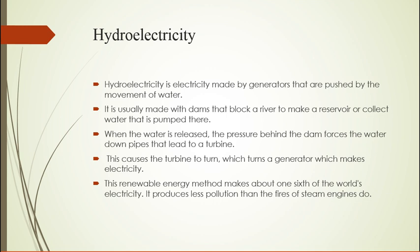Hydroelectricity is usually made with dams that block a river to make a reservoir, or collect water that is pumped there. When the water is released, the pressure behind the dam forces the water down pipes that lead to a turbine. This causes the turbine to run, which turns a generator and makes electricity. This renewable energy method produces about one sixth of the world's electricity and produces less pollution than steam engines do.